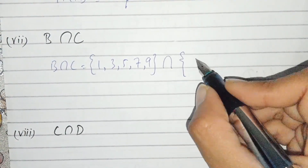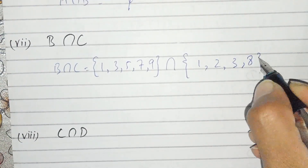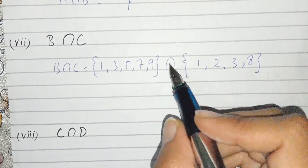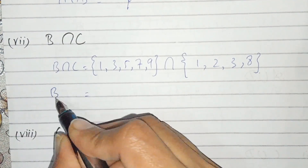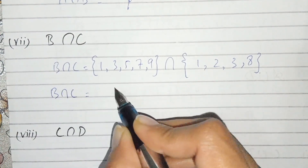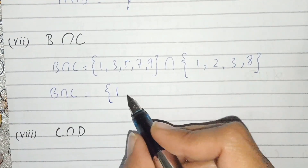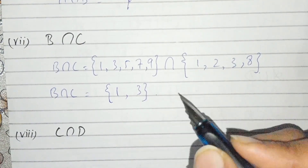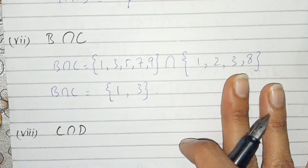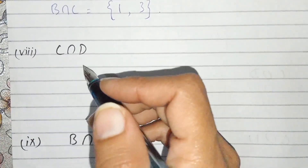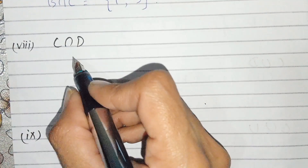Now B intersection C: B is {1,3,5,7,9} and C is {1,2,3,8}. There are two common values: 1 and 3. So B intersection C is {1,3}. This is the answer to part number seven.